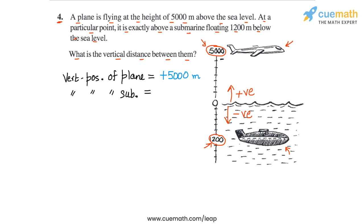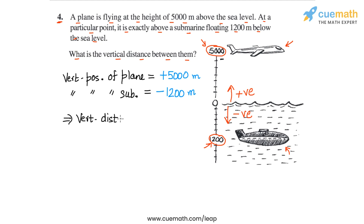And the vertical position of the submarine — because the submarine is 1200 meters below the sea level, the vertical position of the submarine will be −1200 meters. Now we can calculate the vertical distance.